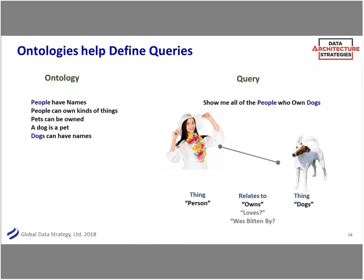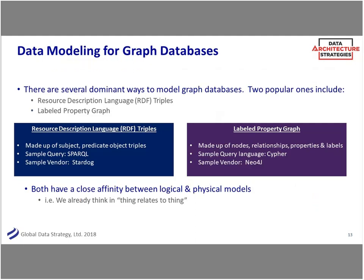When would I use a triple store versus a labeled property graph? That's almost a religion. From my experience, the labeled property graph has been the more popular and easier to use. The RDF triple store has some industry body support - the semantic web uses it as well. I'll leave that to your preference. In terms of what I see in usage, it seems to be more towards the labeled property graph.